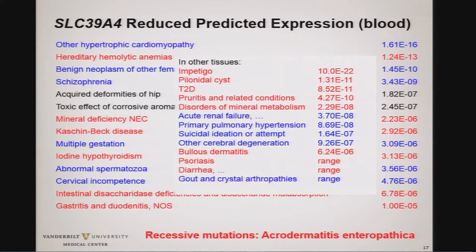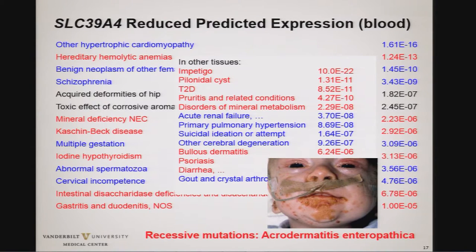We see schizophrenia with a 10⁻⁹ association, and suicidal ideation or attempt. So the behavioral problems you saw in kids with the Mendelian disease are diagnosed as schizophrenia, and you even see suicidal ideation and cerebral degeneration — which is what has been hypothesized is going on in the brain with zinc deficiencies. We don't recognize this as Mendelian disease because these are adults, and it's just reduced expression of the gene, not necessarily apparent at birth — it comes on over time.